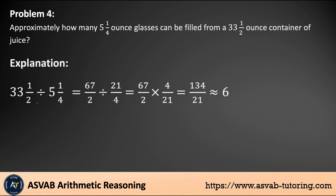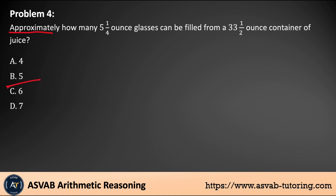You convert the mixed numbers into improper fractions: 67 over 2 divided by 21 over 4. Using the 'Keep, Change, Flip' rule — keep whatever is on the left, change division to multiplication, and flip the second fraction. Multiplying 67 times 4 gives 134, and 2 times 21 gives 42. Simplifying 134 over 42 gives you 6. That is the correct answer, letter C.